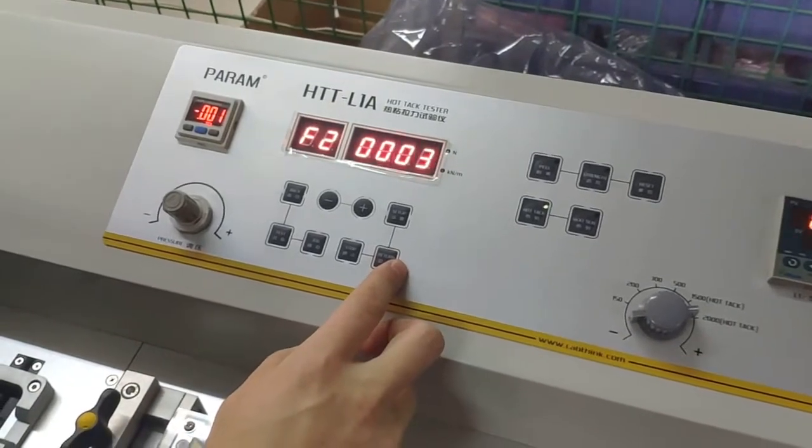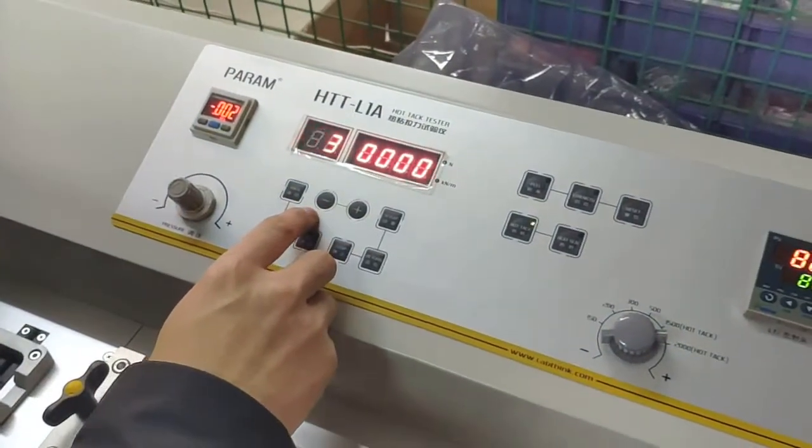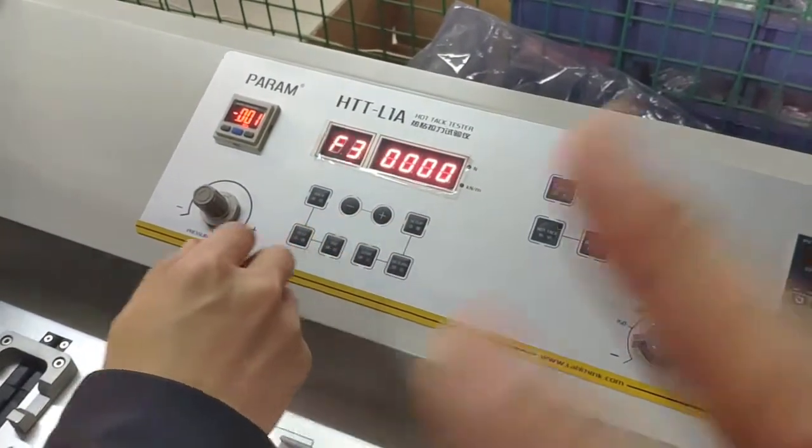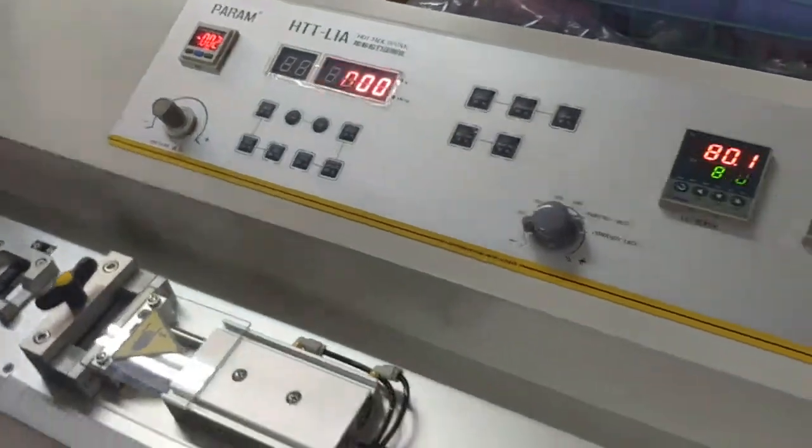F2 means the sample number. After F2, the F3 and other values you don't need to care anymore. All the other values we don't need to set.